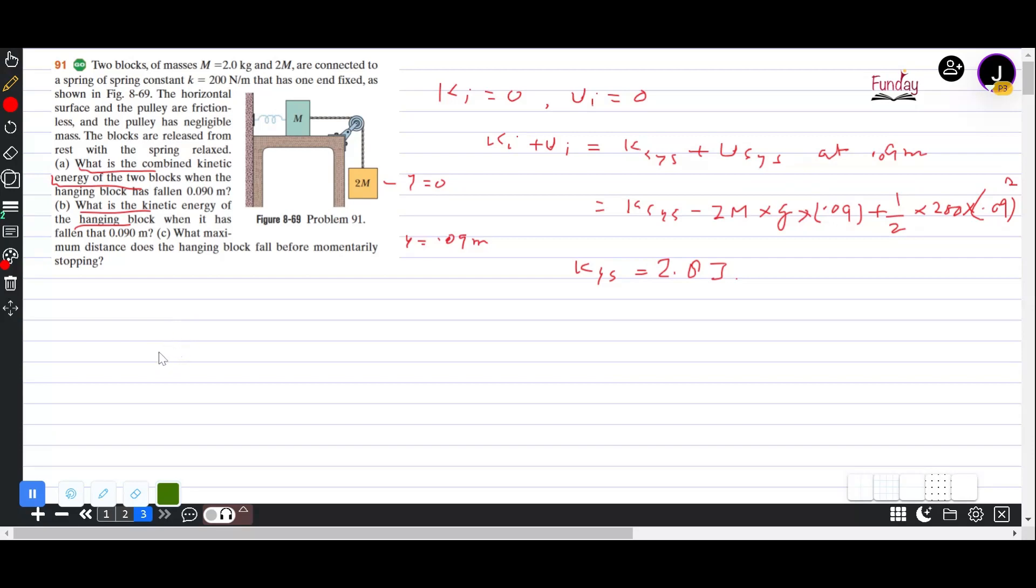So kinetic energy of 2M block over kinetic energy of 3M of the system is half into 2M into V square over half into 3M into V square. V square, V square, then adjusted, so we get 2 by 3.